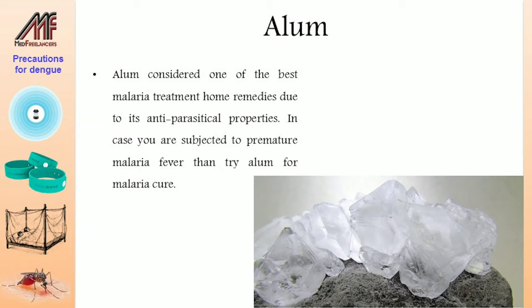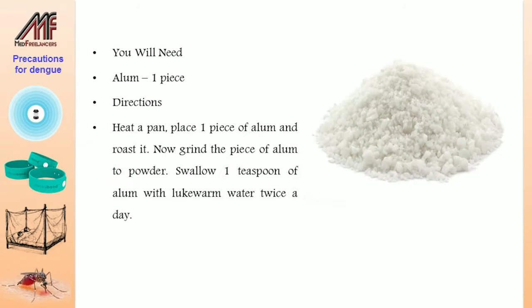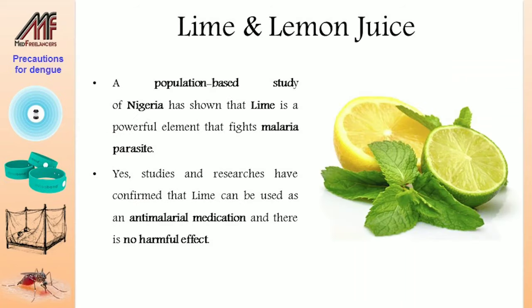Alum is considered one of the best malaria treatment home remedies due to its anti-parasitical properties. If you are subjected to premature malaria fever, try alum for malaria cure. Heat a pan, place one piece of alum and roast it. Grind the alum to powder and swallow one teaspoon with lukewarm water twice a day.